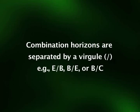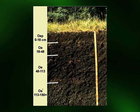The second kind of transition horizons consists of horizons with two distinct parts that have recognizable properties of two kinds of master horizons indicated by the capital letters. The two capital letters designating such combination horizons are separated by a virgule, like E/B or B/C. In addition to these, many other subordinate distinctions are recognized within master horizons to designate specific material accumulations; these distinctions are denoted by suffixes subscript to the master horizons.